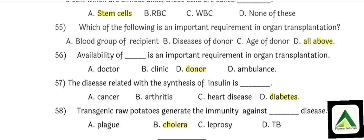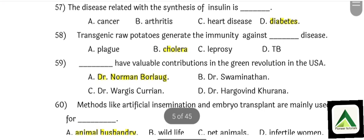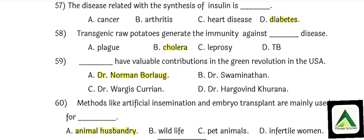Question number 56: Availability of a donor is an important requirement in organ transplantation. That is option number C. Question number 57: The disease related with the synthesis of insulin is option number D: Diabetes. Question number 58: Transgenic raw potato generates immunity against option number B: Cholera.